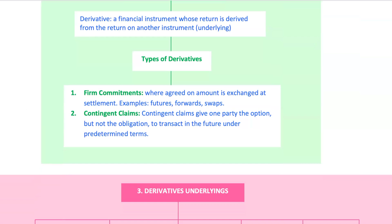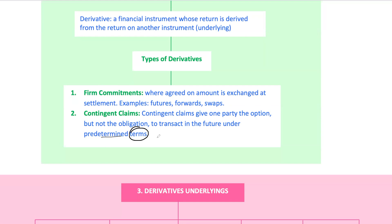Let's talk about the types of derivatives, because they're not all created equal. We have firm commitments like futures, forwards, and swaps, where an agreed upon amount is exchanged at settlement. Then there are contingent claims like options, which give one party the right but not the obligation to engage in a future transaction at previously agreed terms.